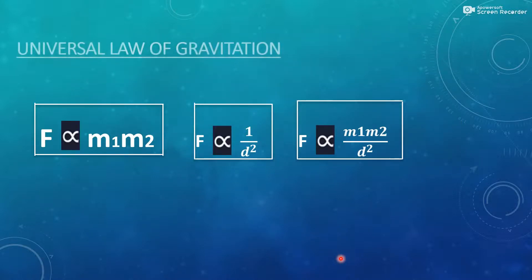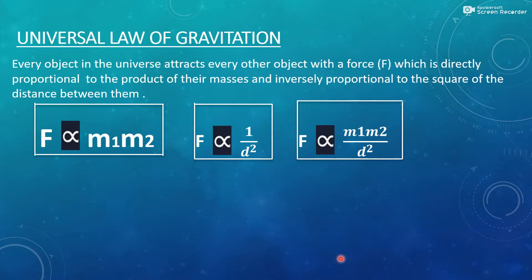Universal law of gravitation states that every object in the universe attracts every other object with a force which is directly proportional to the product of their masses and inversely proportional to the square of the distance between them.